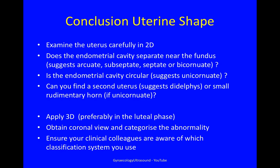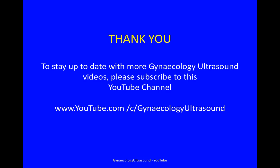Examine the uterus carefully in 2D. Does the endometrial cavity separate near the fundus? That would suggest an arcuate, subseptate, septate or bicornuate uterus. Is the endometrial cavity circular? This suggests a unicornuate uterus. Can you find a second uterus? This suggests didelphus, or a small rudimentary horn if the uterus is unicornuate. Apply 3D and take a volume, preferably in the luteal phase. Obtain a coronal view, categorise the abnormality, and ensure your clinical colleagues are aware of which classification system you use.